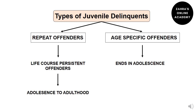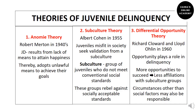The second type is age-specific offenders. These juvenile delinquents involve in criminal activities only during adolescence, and after entering adulthood they stop. So age-specific offenders choose antisocial behavior for a certain period, then desist. These are the two types of juvenile delinquents.